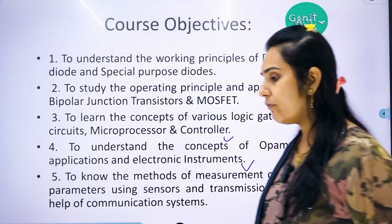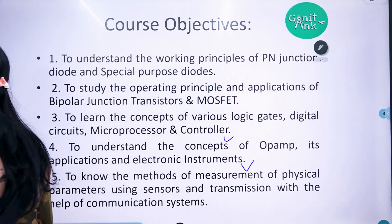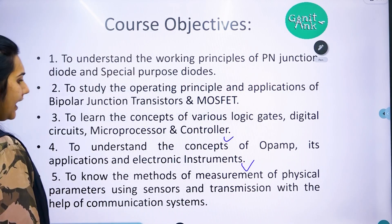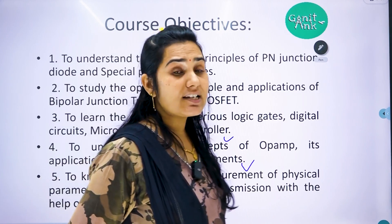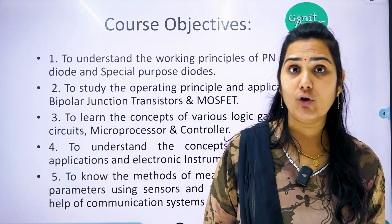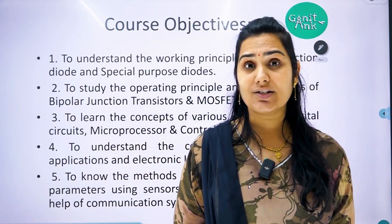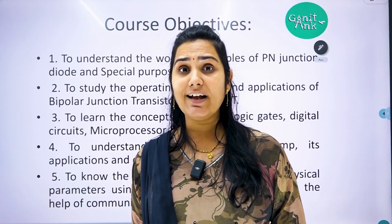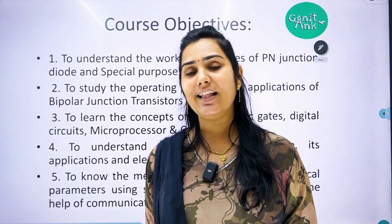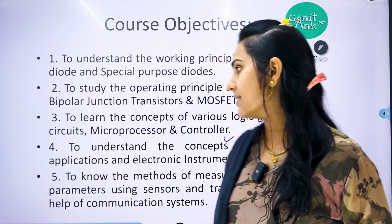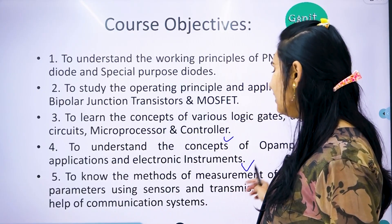Unit number 5 is about all measurements and sensors. We can measure various electronic quantities like voltage, current, and resistance. The devices we require for measuring these will be discussed in unit number 5.